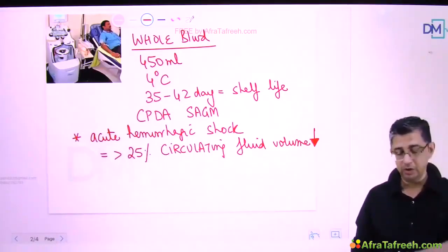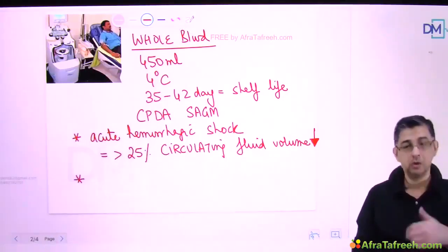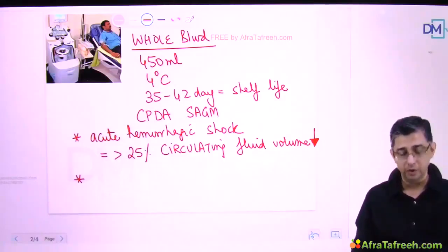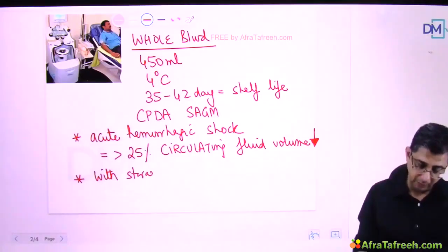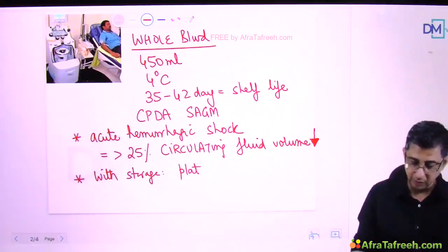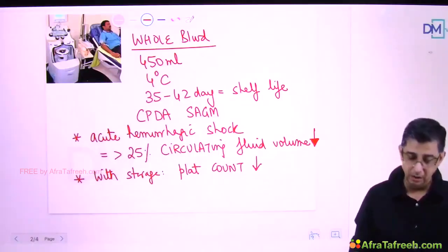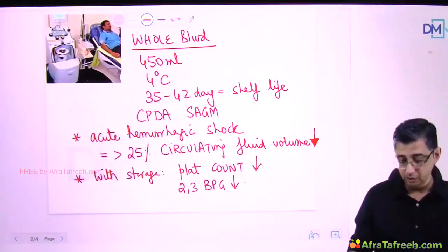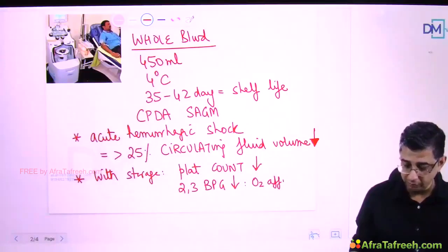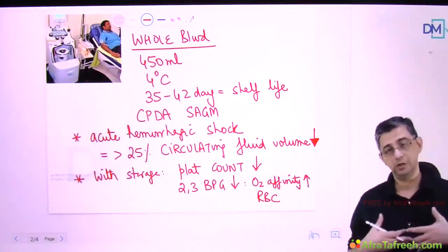Nowadays, whole blood is given when there is substantial depletion of circulating fluid volume. But there are problems with storing blood. One primary problem is that platelet count will begin to reduce gradually. The second problem is that levels of 2,3-bisphosphoglycerate, 2,3-BPG, will fall. This increases the oxygen affinity of the RBCs - meaning RBCs become selfish and keep oxygen for themselves rather than donating it to the tissues.